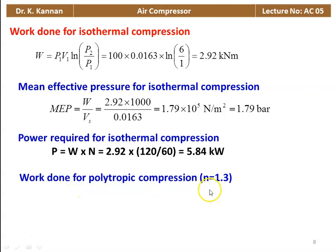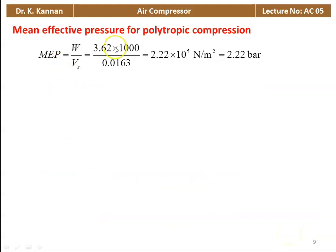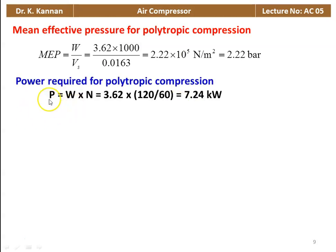Work done for polytropic compression (n = 1.3): W = (1.3/0.3) × 100 × 0.0163 × [(6/1)^(0.3/1.3) - 1] = 3.62 kN·m. MEP for polytropic compression = 3620 / 0.0163 = 2.22 × 10⁵ N/m², or 2.22 bar. The MEP for polytropic compression is higher than for isothermal. Power for polytropic: P = 3.62 × (120/60) = 7.24 kW.